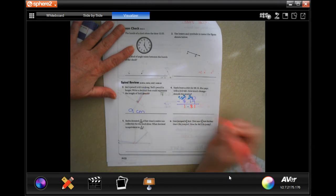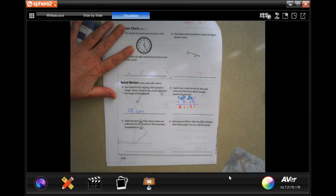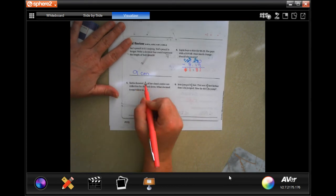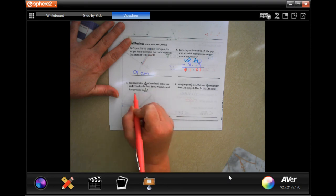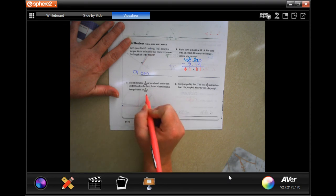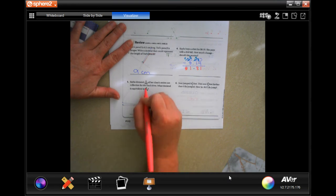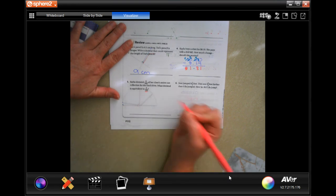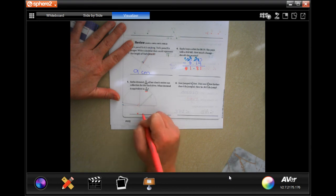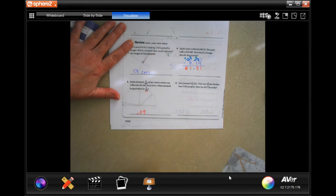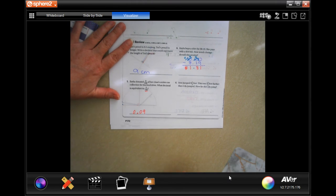Sasha donated 9/100 of her class's entire can collection. What decimal is equivalent to 9/100? You just need a 9 in the hundredths box. You have a decimal, the first spot after that's the tenth, the next spot is the hundredth—boom, done. 0.09. You can put a zero in front if you want, it doesn't matter.